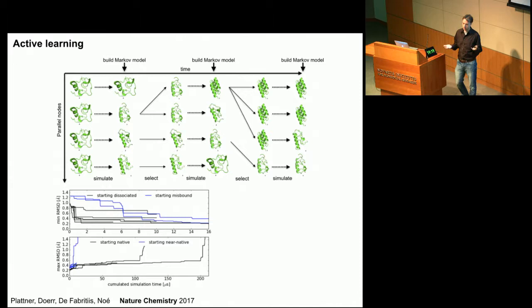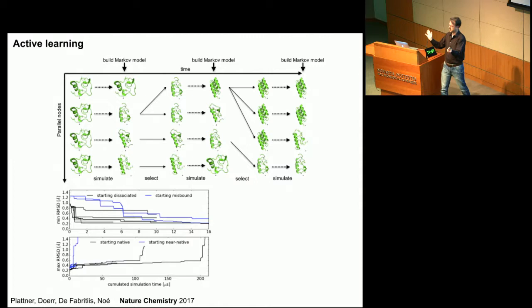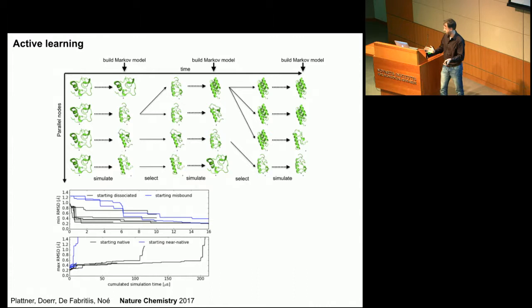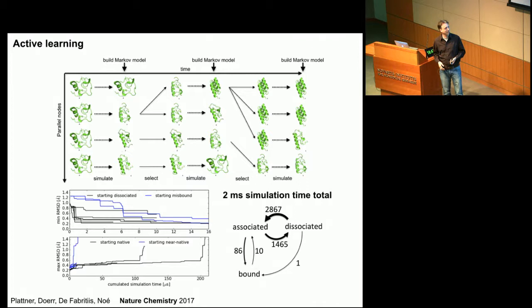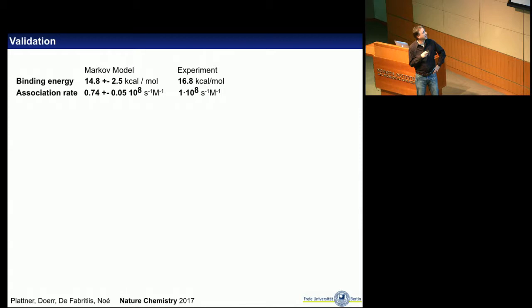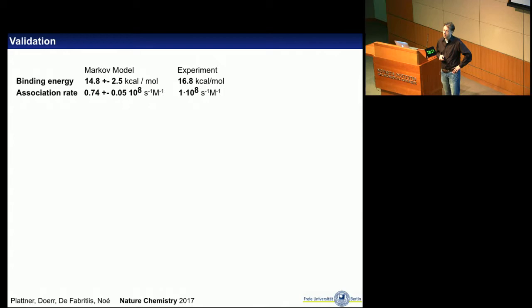With an aggregate simulation time of a few to a few tenths of microseconds, we can reliably bind the proteins to their native structure starting from dissociated states. Within an aggregate sampling time of about 100 microseconds, we can dissociate the proteins from their native complex — much faster than it should happen in equilibrium. So either our force field is completely wrong or we had some acceleration. We collected many binding and unbinding events and built a hidden Markov model, computing quantities like binding energy and association rate, which came out very good.